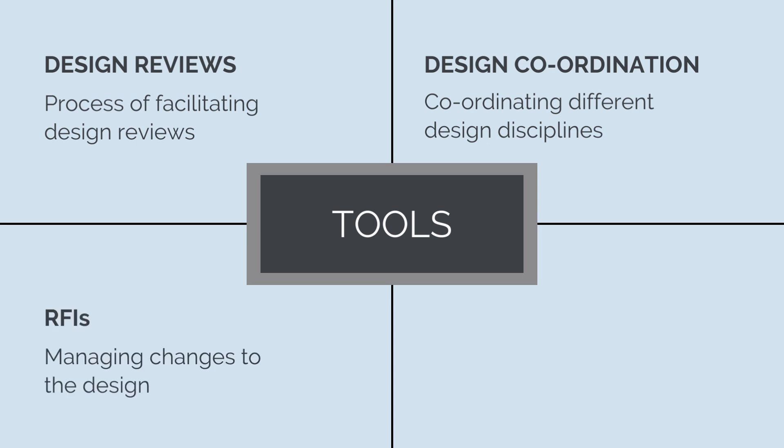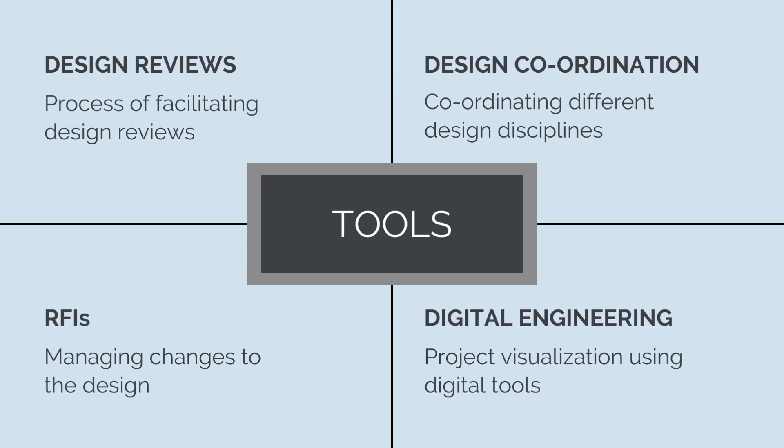RFIs, or requests for information, are the change control process we follow to ensure changes to the design are captured, approved, and controlled during the construction phase. And Building Information Modeling, BIM — BIM technology enables efficient design coordination, clash detection, and visualizing the project in a virtual environment.